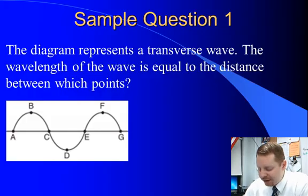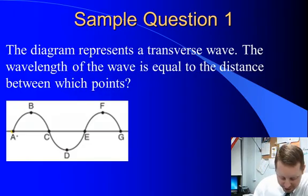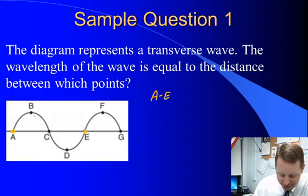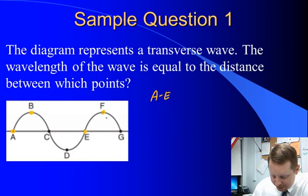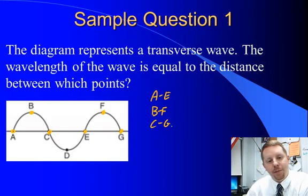Sample question one. The diagram represents a transverse wave. The wavelength of the wave is equal to the distance between which points? That means we have to find the same point on consecutive waves. If I look at A, I can see the same point over here at E. So the distance between A and E would give us a wavelength. I also see here if we start at B, we have the same point on a consecutive wave there at F. So B and F should work. Or if I start at C, the distance between C and G is the distance between the same point on consecutive waves. So I see three sets of points you could use to determine the wavelength here.